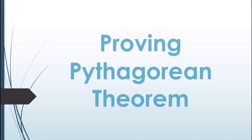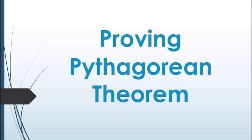Our lesson for today is all about proving the Pythagorean theorem. In the previous lesson, you learned about the right triangle similarity theorem and the geometric mean. This theorem will be used in proving the Pythagorean theorem.